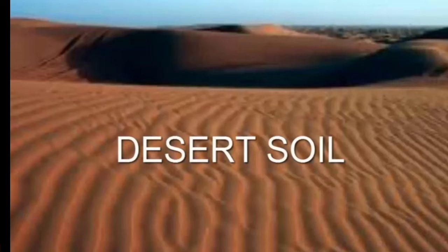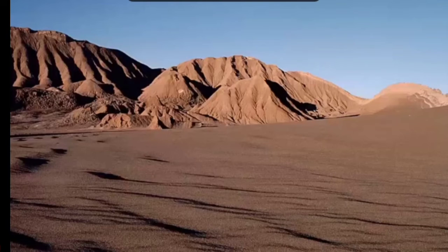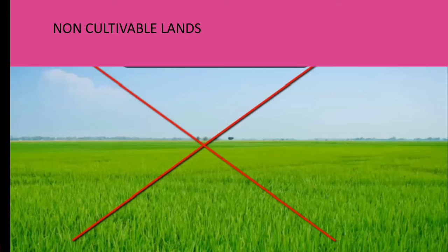Desert soil: the climatic condition of a desert is very hot, so it is not suitable for cultivating any crops. Desert soil is not cultivable land.